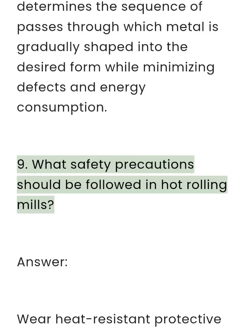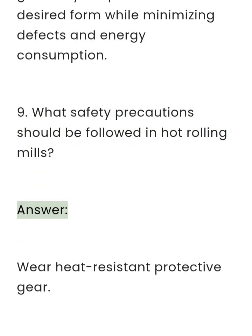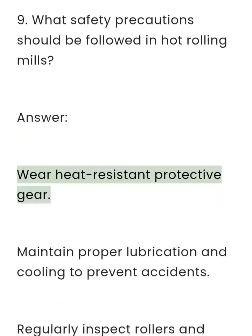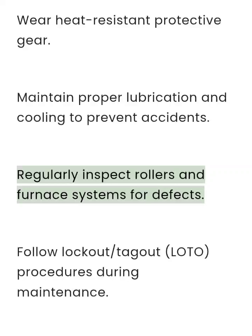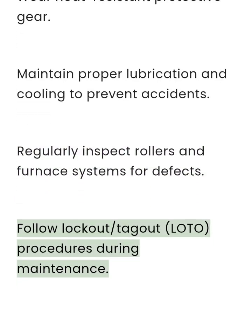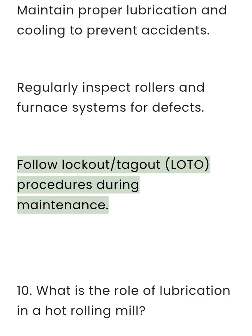Question 9: What safety precautions should be followed in hot rolling mills? Answer: Wear heat-resistant protective gear. Maintain proper lubrication and cooling to prevent accidents. Regularly inspect rollers and furnace systems for defects. Follow lockout/tagout procedures during maintenance.